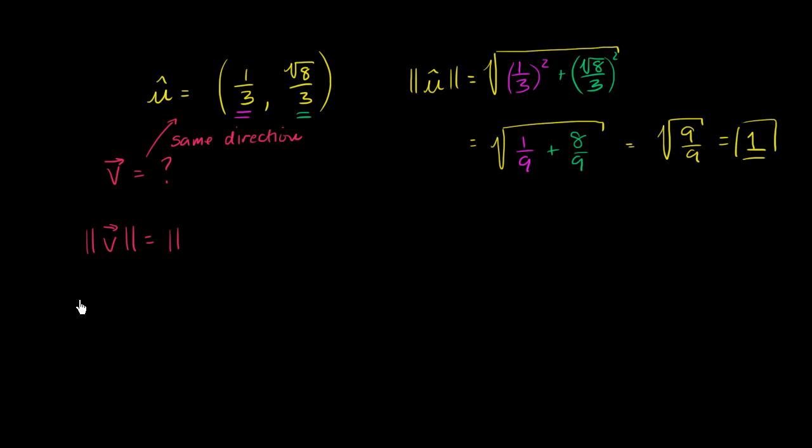So we could say that vector v could be 11 times (1/3, square root of 8 over 3). And so what is this going to be equal to? This is going to be equal to 11 over 3 comma 11 square roots of 8 over 3.